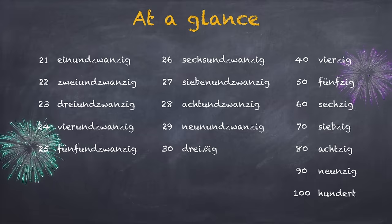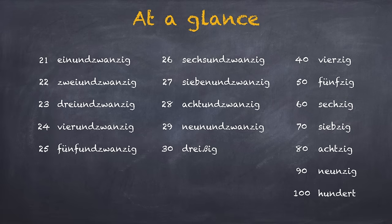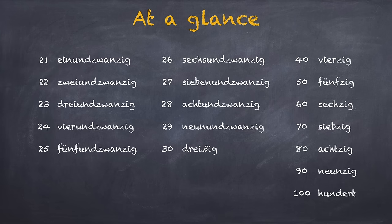Let's summarize now. Einundzwanzig, zweiundzwanzig, dreiundzwanzig, vierundzwanzig, fünfundzwanzig, sechsundzwanzig, siebenundzwanzig, achtundzwanzig, neunundzwanzig. Dreißig, vierzig, fünfzig, sechzig, siebzig, achtzig, neunzig. Hundert.